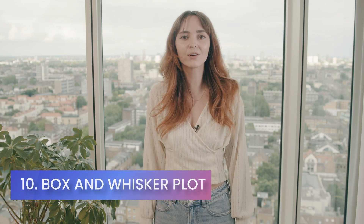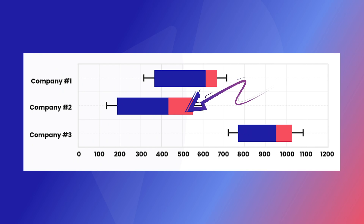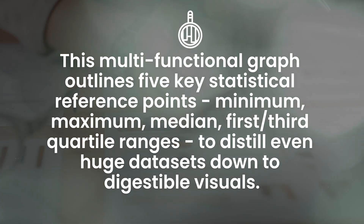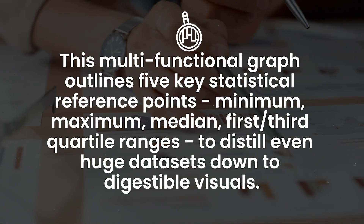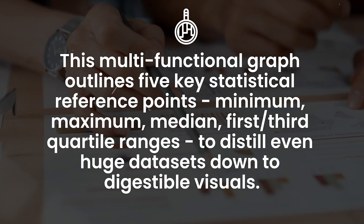Now let's move on to the box and whisker plot for all your data interpreters. This multifunctional graph outlines five key statistical reference points — minimum, maximum, median, and first and third quartile ranges — to distill even large data sets down to digestible visuals. For financial analysts, having the extremes, typical value bandwidths, and skews mapped can surface helpful findings from customer spend variances to unequal product line results.